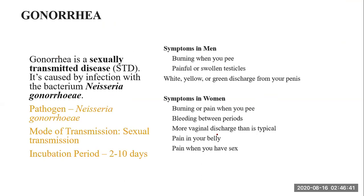Another kind of disease is gonorrhea. It is a sexually transmitted disease caused by the bacterium Neisseria gonorrhoeae. Mode of transmission is sexual transmission. Incubation period is 3 to 10 days. Symptoms in men include burning when urinating, painful or swollen testicles, and white, yellow, or green discharge. Symptoms in women include burning or pain when urinating, bleeding between periods, vaginal discharge, pain in the belly, and pain during sexual intercourse.